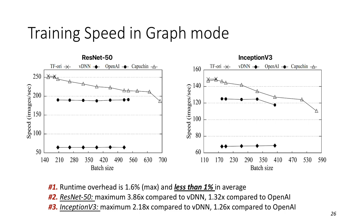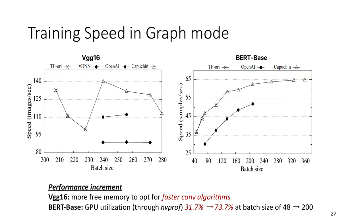As for training speed in graph mode, the first two points in the figure are not running out of memory in original TensorFlow, and we can see that the runtime overhead introduced by Capuchin is less than 1% in average. For ResNet-50, we achieve maximum 3.86 times speedup compared to VDNN and 1.32 times compared to OpenAI. Inception is a bit lower than ResNet-50. For these two figures, it's interesting that performance is improved on VGG16 and BERT. On VGG16, we free more memory so we can choose faster convolution algorithms. For BERT, we observe that the GPU utilization goes up from 31.7% to 73.7% at the batch size of 48 to 200. Therefore, this performance improvement results from more computation saturating the GPU.